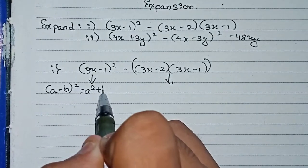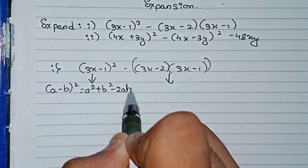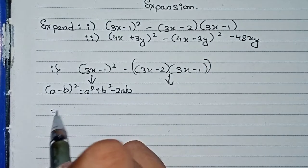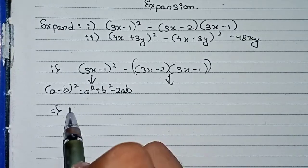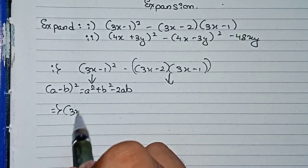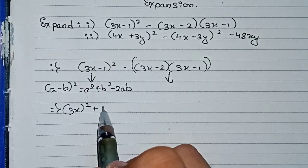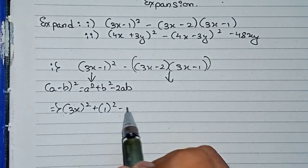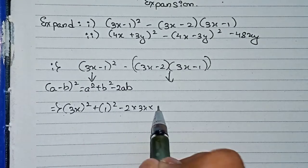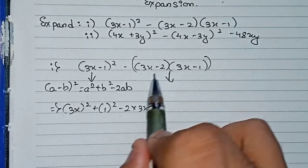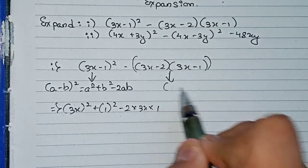The result of (a-b)² will be a² plus b² minus 2ab. So putting in the values: (3x)² plus (1)² minus 2 into 3x into 1. For the second part, we will use another identity.